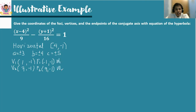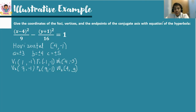For the endpoints of the conjugate axis, w sub 1 and w sub 2, we use the formula h, k plus or minus b. Our h is 4, so simply copy 4. With reference to b, we have k plus or minus b: negative 1 minus 4 is negative 5, and negative 1 plus 4 is 3.